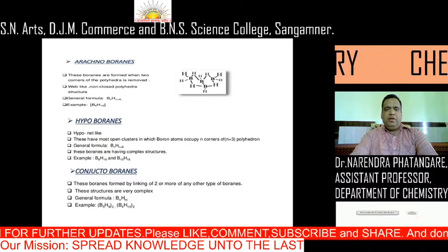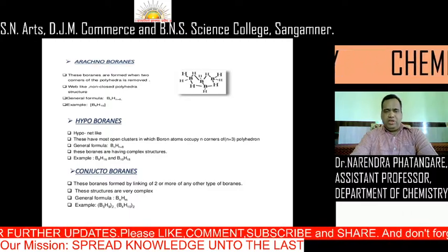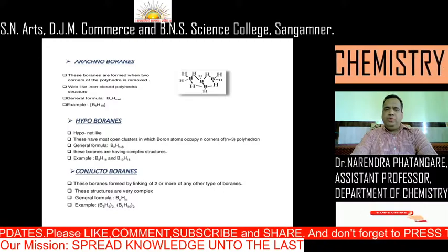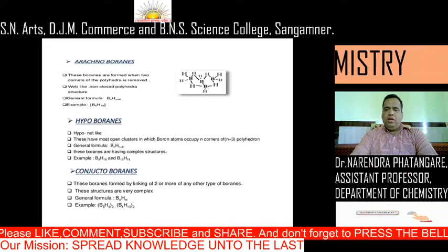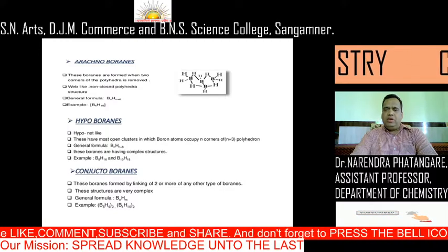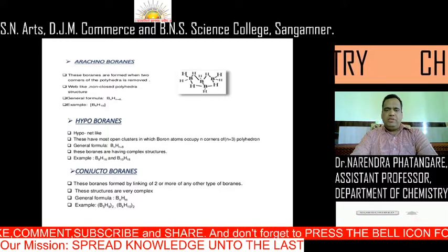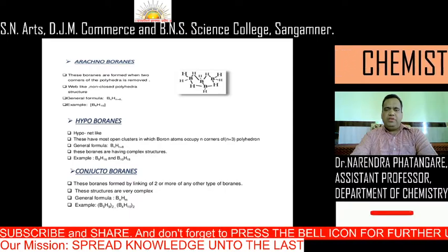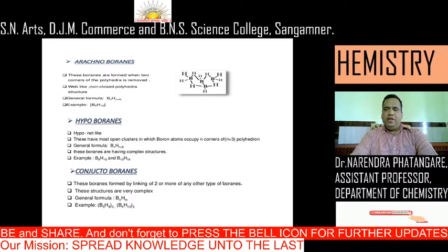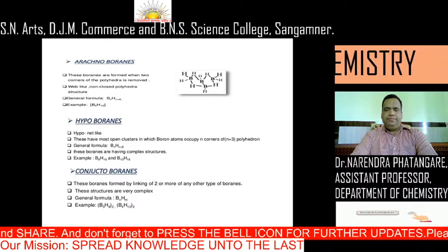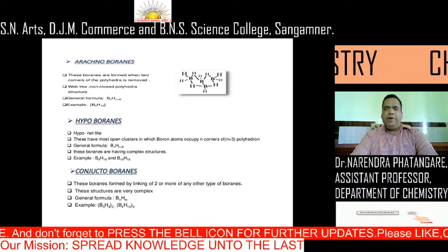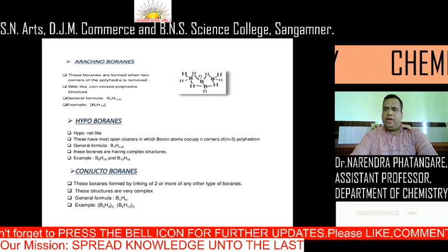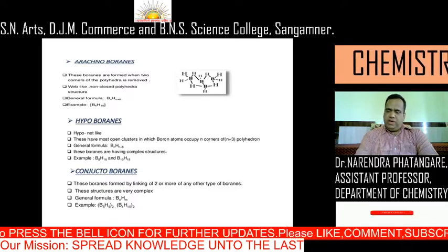The fifth type is conjuncto boranes. These boranes are formed by linking two or more of any other type of boranes. Their structures are very complex. They have the general formula BnHm. Examples include two B5H9 units and two B4H10 units linked together.